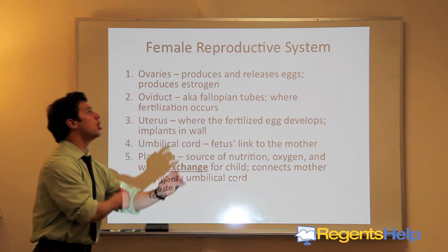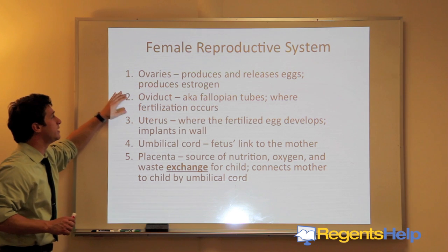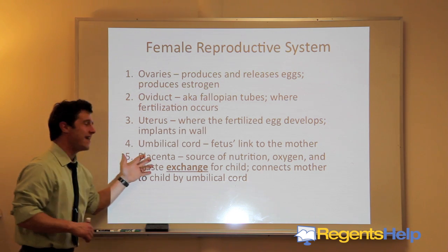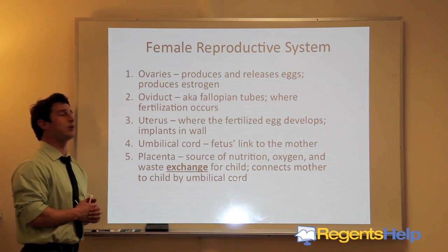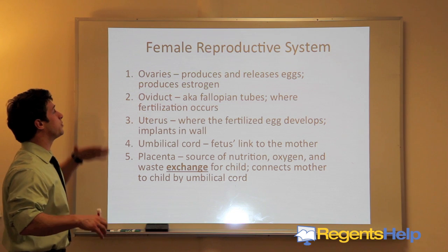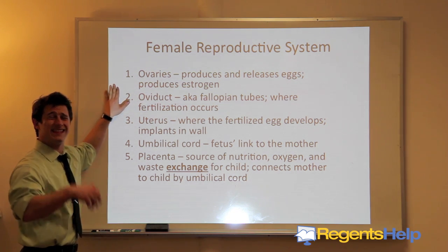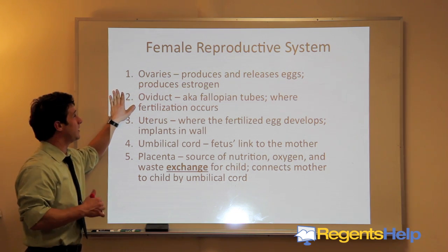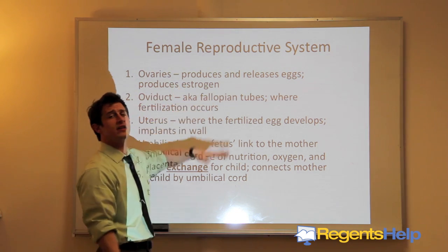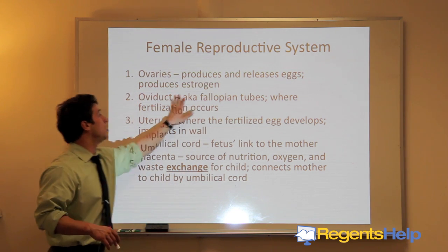Structures you should know in the female reproductive system are the ovaries, oviduct, uterus, umbilical cord, and placenta. The ovaries produce and release eggs — the sex cells of women — and also produce estrogen, which regulates sex cells and sex characteristics.